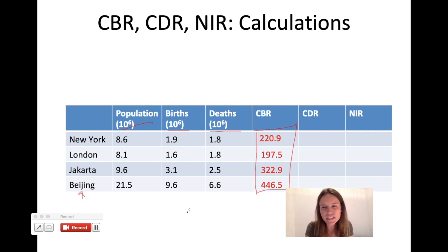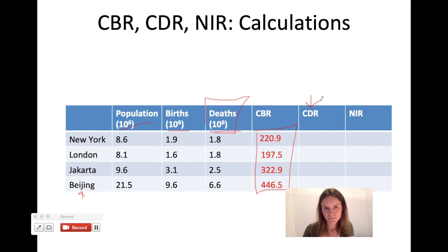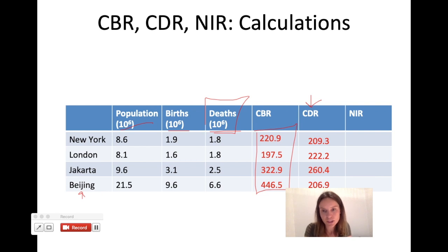But you can't fully understand population size without also knowing how many people are dying. Do the same math for crude death rate: take deaths, divide by population, multiply by 1,000. In New York the crude death rate is 209.3; in London it's 222.2; in Jakarta it's 260.4; and in Beijing it's 206.9. Pause the video if you need to check how those numbers were calculated, because you will likely need to do this on your exam.